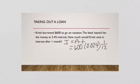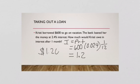When you multiply all those together, the amount of interest she owes is $1.20. So if she borrowed $600 to go on a trip at 2.4% interest, after one month she would owe an additional $1.20. It doesn't sound like a lot, does it?